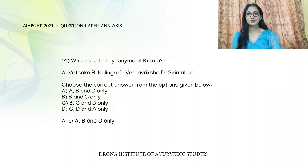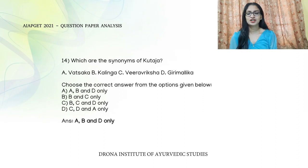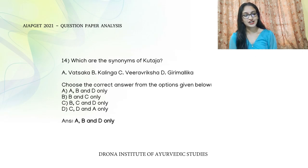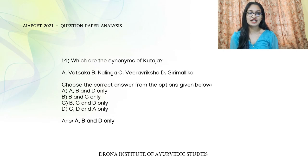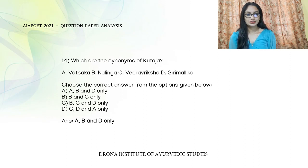The next question asks which are the synonyms of Kudaja. The options include Vatsaka, Kalinga, Veera Vriksha, and Girimallika. The synonyms of Kudaja include Vatsaka, Kalinga, and Girimallika. Veera Vriksha is actually the synonym of Arjuna, not Kudaja.